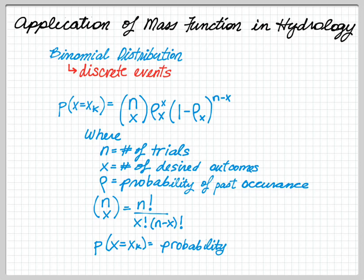And remember, probability p of x equaling some outcome of xk is the actual probability of desire. Now, by itself, this is a probability mass function.